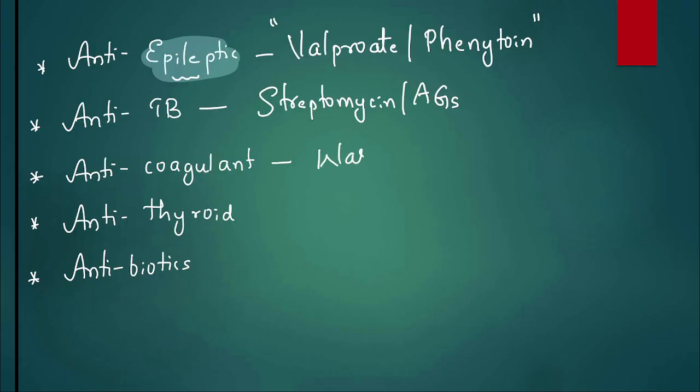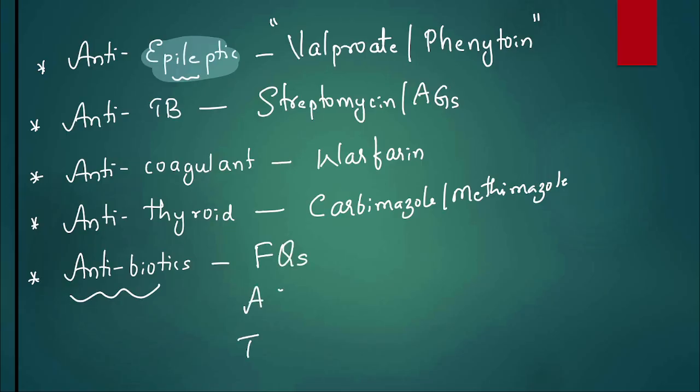The anticoagulant contraindicated in pregnant women is warfarin, particularly in first trimester. The antithyroid drugs contraindicated in first trimester are carbimazole or methimazole because they produce teratogenicity. Antibiotics contraindicated in pregnancy: remember the mnemonic FAT - F for fluoroquinolones, A for aminoglycosides, T for tetracycline. That is the purpose of this MCQ - very high yield points on pregnancy and contraindicated drugs.